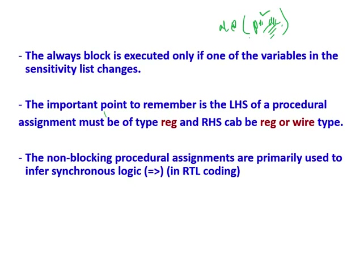The important point to remember is: whatever we write inside this always block, inside begin and end, the left-side variable has to be a reg type. The right-side variable can be reg type or wire type. So if I write always at posedge clock and write a = b inside this always block, then 'a' must be a reg type. Else it will show an error — if the left-hand side variable is wire instead of reg, then it will show error.